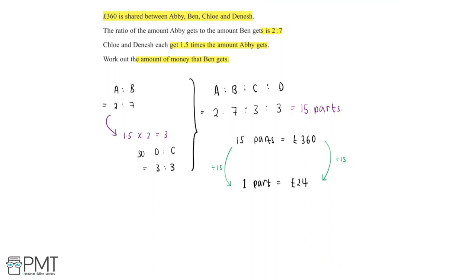Now we need to find the amount of money that Ben gets. Looking at the ratio, we can see that Ben gets 7 parts. If one part is worth £24 and Ben gets 7 parts, we can say that Ben gets 24 multiplied by 7, which is equal to £168. So we've found out that Ben gets £168.